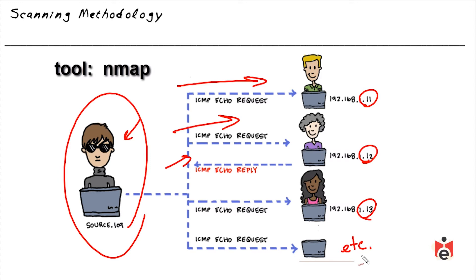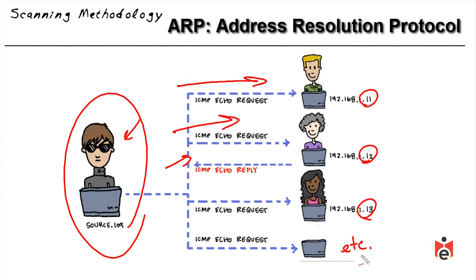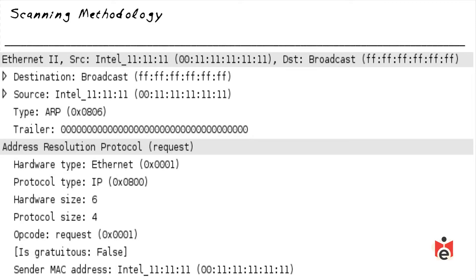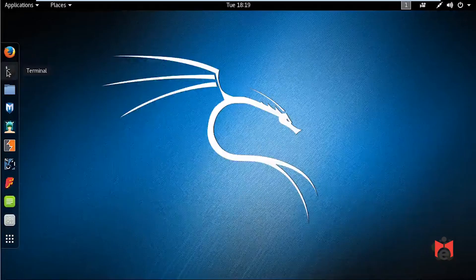There are multiple ways of doing a sweep. We could do an ICMP echo request and wait for responses, but some devices are configured not to respond to ICMP echo requests. However, most devices on a network will respond to an Address Resolution Protocol request. ARP is sent as a broadcast asking for the Layer 2 address of the device owning a given IP — say 192.168.1.1 — and whoever owns that IP responds.